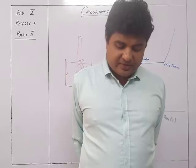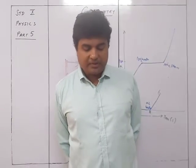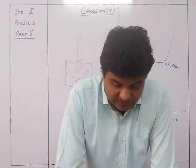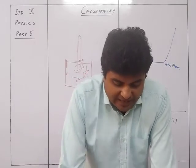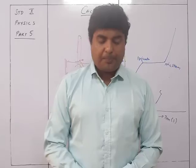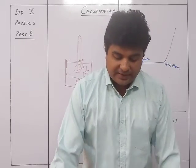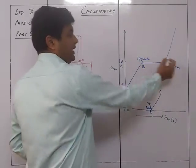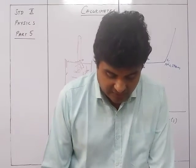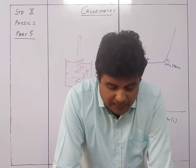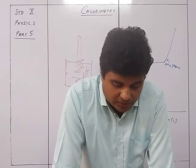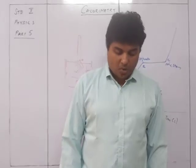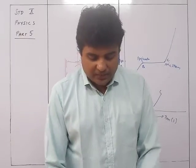From the heating curve of water: initially water is at 20 degrees Celsius. With absorption of heat, the temperature rises continuously in part AB while it is in the liquid phase. At B, boiling starts and the temperature does not rise further in part BC, although heat is being continuously absorbed. Part BC is parallel to the time axis and represents boiling. The temperature at point B — 100 degrees Celsius — is the boiling point of water.